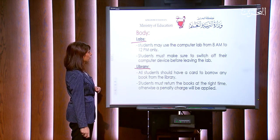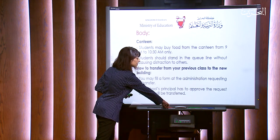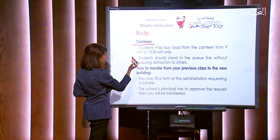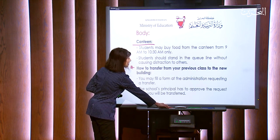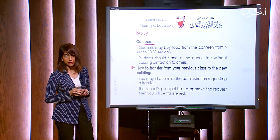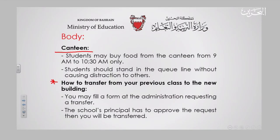The third bold point is the canteen. Rule one: students may buy food from the canteen from 9 a.m. to 10:30 a.m. only — here I'm telling them the timing for using the canteen. Rule two: students should stand in the queue line without causing distraction to others. That is another important rule.